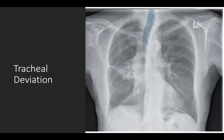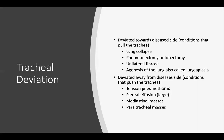This is an example of tracheal deviation. You can see the trachea highlighted in blue, showing right tracheal deviation. The trachea is considered deviated if any portion along its length is completely to the left or right of the midline. Make sure the film is not rotated, as a rotated film can give the impression of tracheal deviation when the trachea is actually midline.